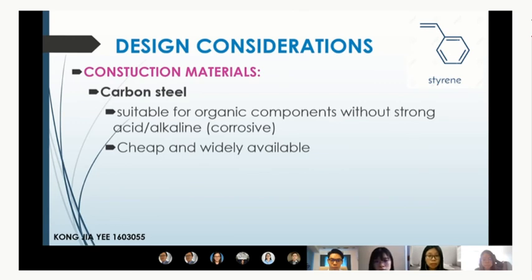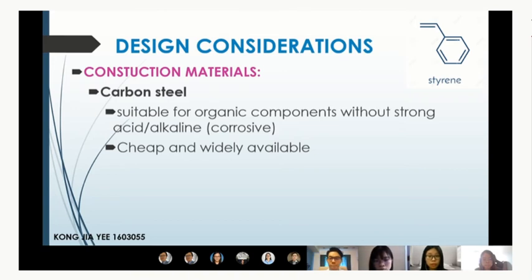Carbon steel is the construction material used for the three-phase separator and coolers, as the plant handles hydrocarbons (organic compounds) without strong acid or alkaline presence that would cause corrosion, and carbon steel is low cost and widely available.